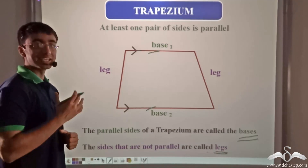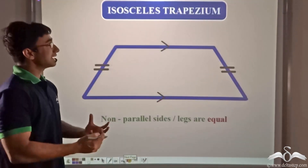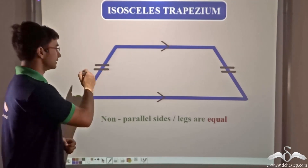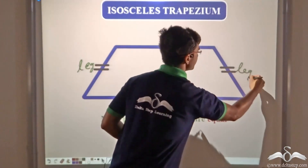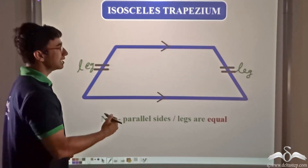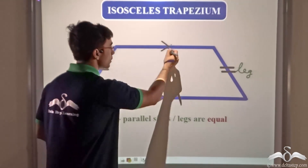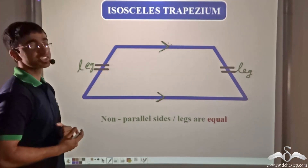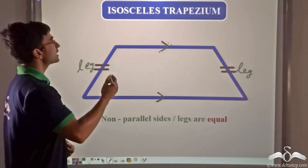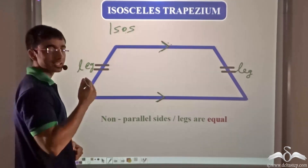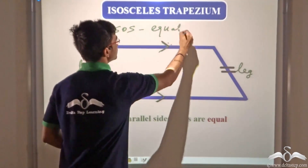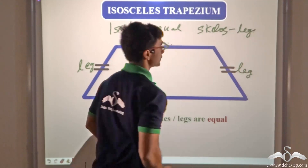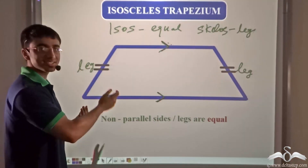There is also a special case of a trapezium known as an isosceles trapezium. In an isosceles trapezium, the non-parallel sides — that is, the legs — are equal to one another. The word 'isosceles' is derived from Greek, meaning equal legs.